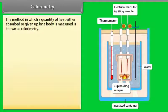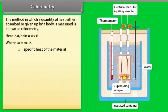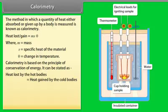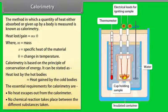Calorimetry is the method in which a quantity of heat either absorbed or given up by a body is measured. Heat loss or gain = MSθ, where M is mass, S is the specific heat of the material, and θ is the change in temperature. Calorimetry is based on the principle of conservation of energy: heat lost by hot bodies equals heat gained by cold bodies. Essential requirements: no heat escapes from the calorimeter, and no chemical reactions take place between the substances.